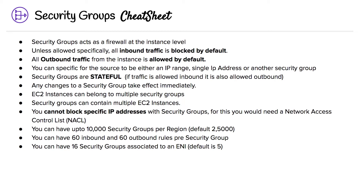Any changes to your security group will take effect immediately. EC2 instances can belong to multiple security groups, and security groups can contain multiple EC2 instances. You cannot block a specific IP address with security groups — for that, you need to use NACLs.